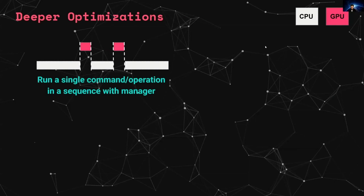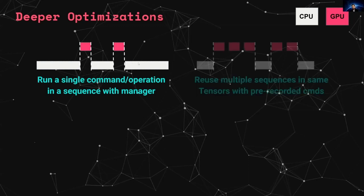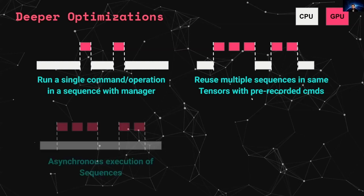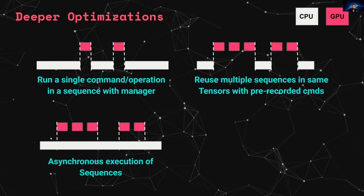Now let's delve into some of those optimizations. What we did was run a single operation through the manager — the CPU submitted, we waited, then submitted the second one, and so on. What we can also do is reuse multiple sequences, meaning we can pre-record commands — record a bunch of operations and then run them all at once. We can also run asynchronous dispatches, meaning the CPU can continue doing other things while the GPU is running, then submit more asynchronously. There's also an await function that lets you wait for things to finish.